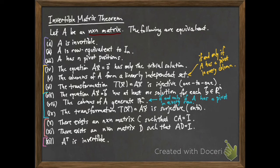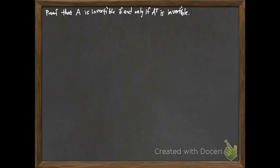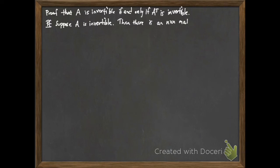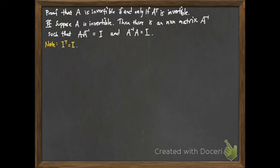Statement twelve relates a matrix being invertible to its transpose being invertible. Let's prove that A is invertible if and only if A transpose is invertible. Suppose A is invertible; that tells us there's an n by n matrix A inverse such that A times A inverse equals the identity and A inverse times A equals the identity. Now, taking the transpose of the identity matrix gives the identity matrix back, so I'll take transposes of both sides of each equation.